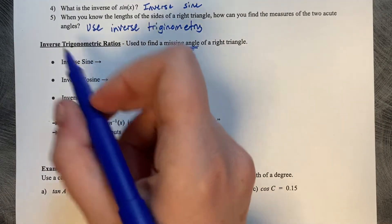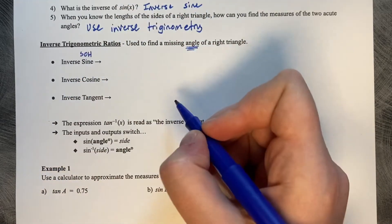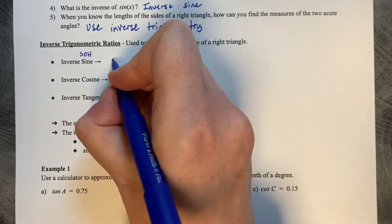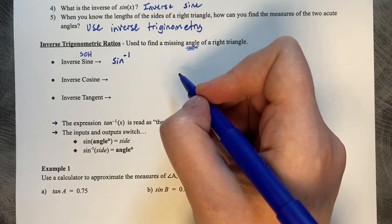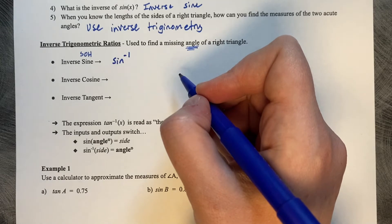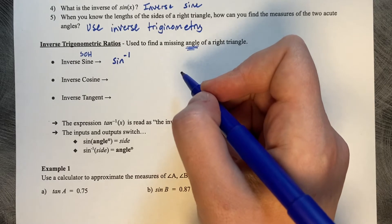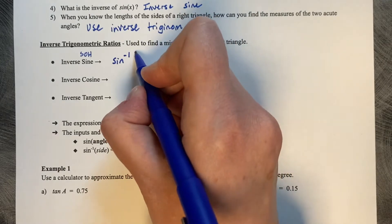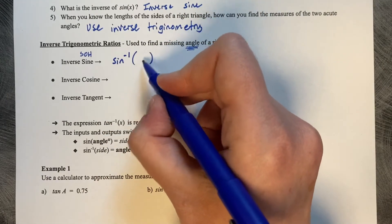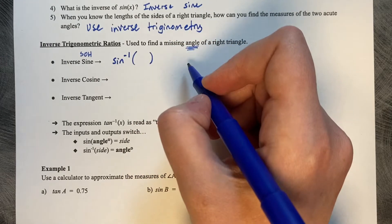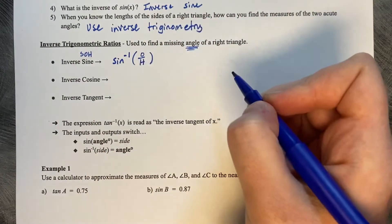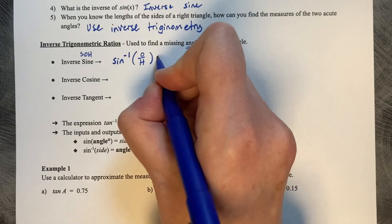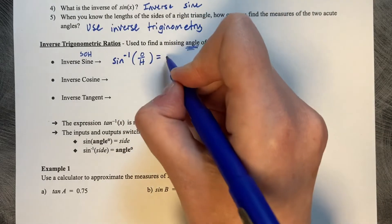This is how you write inverse sine. Remember, sine is opposite over hypotenuse. You write sine with a little negative one at the top. The negative one has nothing to do with the math — you don't type it into the calculator, it is not an exponent. It's just to denote that you're doing the opposite of sine, an inverse sine. Then, instead of an angle or theta going inside the parentheses, your side lengths go inside. So your opposite divided by your hypotenuse goes inside your inverse sine, and that spits out a theta or an angle.